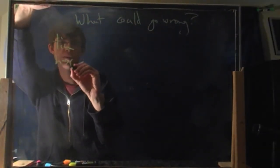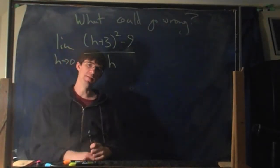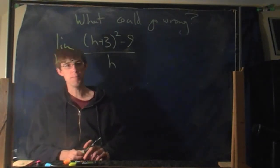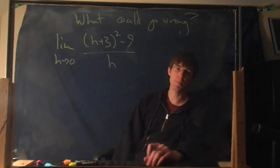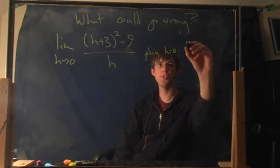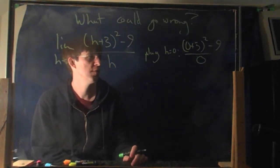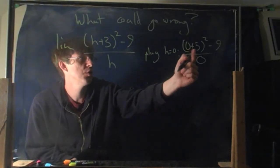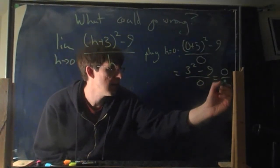Let's try the limit as h goes to 0 of (h+3)² minus 9, divided by h. I'm using h instead of x — math textbooks just decide to change the names of variables for no apparent reason. How do you begin? You should always start by trying to plug it in. So I'm going to try plugging in h equals 0. Upstairs you get (0+3)² minus 9 divided by 0. The top gives 3 squared minus 9, which is 9 minus 9 = 0. So I get 0 over 0.